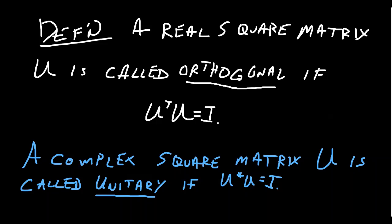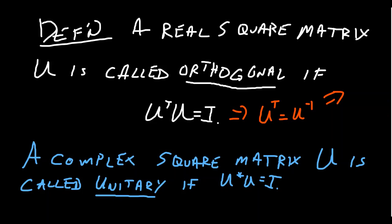I want to introduce another definition. If we have a real square matrix U, we call it orthogonal if it satisfies U^T U = I. That means U transpose times the original matrix gives the identity. Twisting this around, U^T equals U^{-1} — since left and right inverses are the same, this also tells us that U U^T equals the identity. This is what we call an orthogonal matrix.